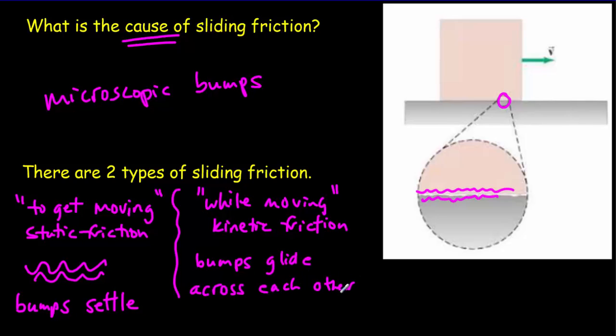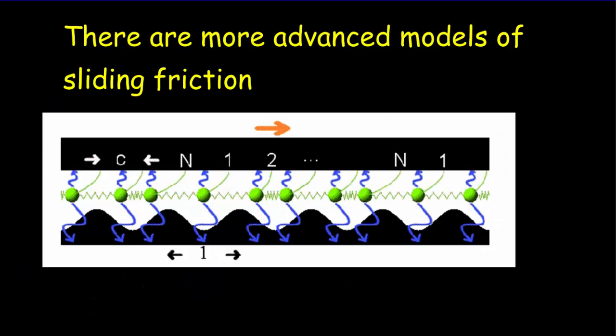For kinetic friction, we can think of this as when the bumps glide across each other but don't settle into one another. Our little model with the microscopic bumps is simple and it works — it's good enough. There are more advanced models of sliding friction; the molecules contain protons and electrons, so there's going to be electrostatic repulsion and attraction, and that has an effect as well.